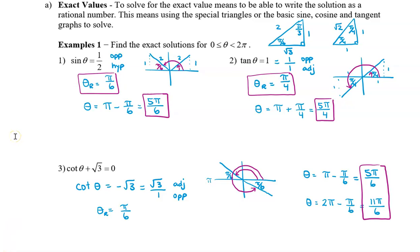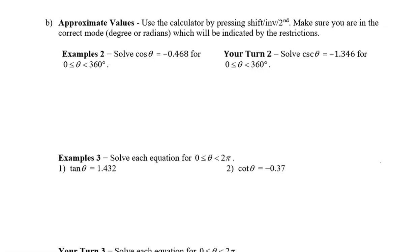Next, we're going to take a look at how to solve trig equations with approximate values. When solving approximate values, you're going to use the calculator by pressing shift, inverse, or the second button, depending on which calculator you have. Also, make sure that you are in the correct mode — press the mode button until you get to degrees or radians. This will be indicated by the restrictions. This first example says that theta is between 0 and 360 degrees, so make sure the calculator is in degree mode. We're going to type this in and find the reference angle as the inverse cosine, but we're going to type it in with a positive value — ignoring the negative sign. When I do this, I get a reference angle of 62.1 degrees.